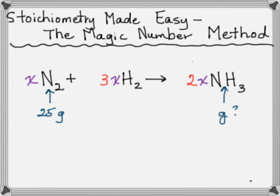The magic number method goes like this. Put an X with every compound. You're halfway there. The next thing you do is out front put the molecular weight of each compound.